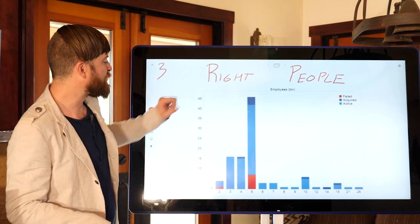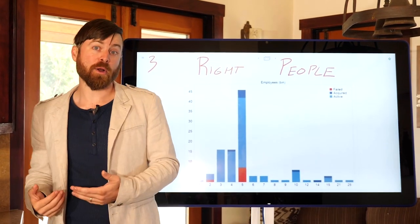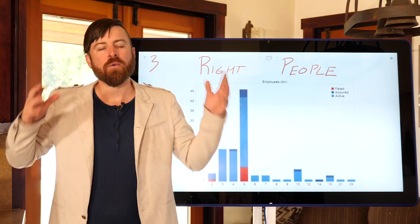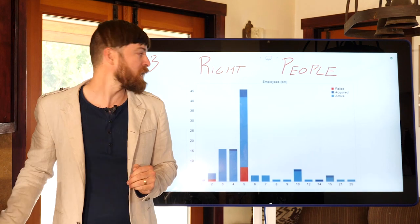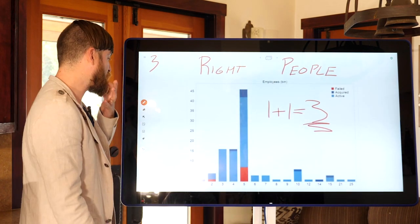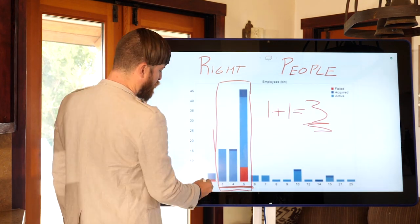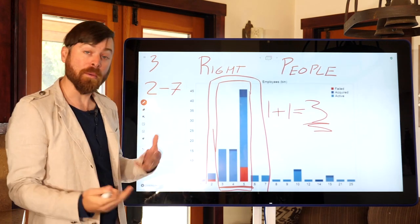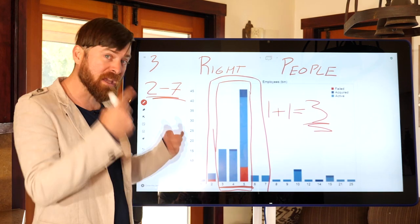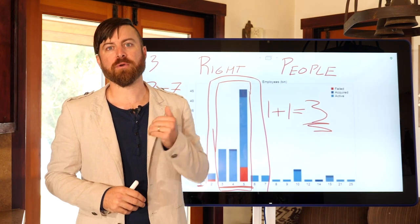The third step is finding the right people — surrounding yourself with the right people, consultants, or building a team. I'm a big advocate for partnerships. Finding two like-minded people moving in the same direction is a 1 plus 1 equals 3 situation. As we see in this chart, the majority of businesses that succeed or get acquired have between 3 to 4 people in them, and 2 to 7 people is the sweet spot. PayPal, for example, had 5 co-founders including Elon Musk and Peter Thiel.